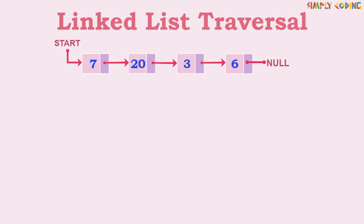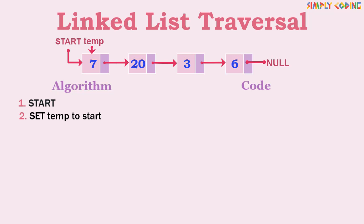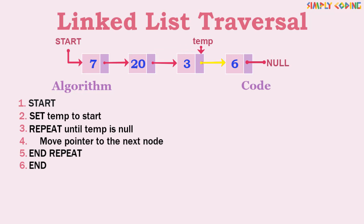We already know that in a linked list there are no indexes. We only have a link to the first node which is start. We access the first node from start and then use the next pointer to access the second node. If you use the start pointer itself to go to the next node, you have effectively lost any way to access the beginning of the list. So we first create a copy of start in temp and use the temp pointer for traversal, continuing until we reach null.